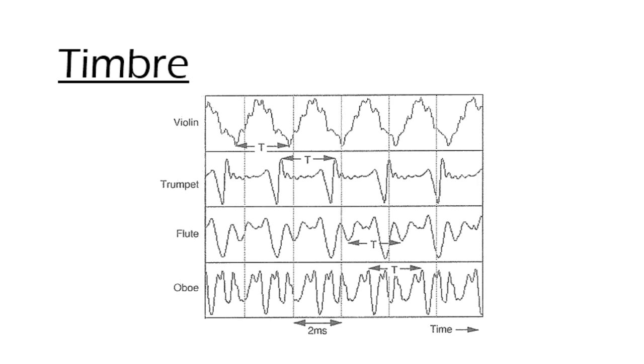In the image, we see the waveforms of four instruments: violin, trumpet, flute, and oboe. We observe they all have a different waveform, which represents the way in which each of them will vibrate, and therefore what the pressure variations they will produce in the air will be like.